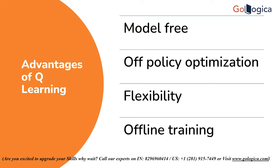Next comes optimization of policy. Without being rigidly bound to a policy that might not allow for the same level of optimization, the model can optimize to get the best potential output. Next comes flexibility. Q-Learning's flexibility may be applied to a wide range of issues and contexts thanks to its model-free, off-policy methodology. It can also be used on offline datasets that have already been gathered.